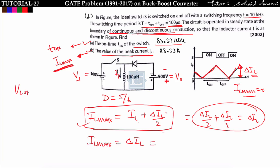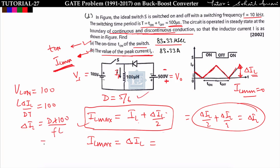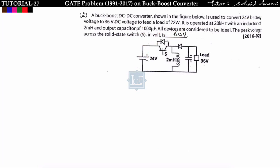To find Δil in the buck-boost converter, during on-time: V_L(on) = V_s = 100 V, so L·Δil/Δt = 100, giving Δil = d × 100 / (f × L). With f = 10 kHz, L = 100 μH, and d = 5/6: Δil = 83.3 A. Therefore il_max = 83.3 A.